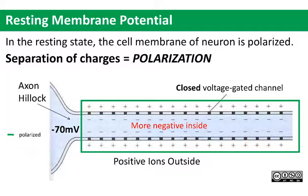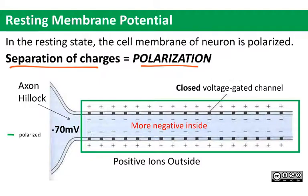What that means is that there is a separation of charges across the plasma membrane — that's what polarization means. So the neuron is polarized, and opposite charges attract one another. You end up with a situation where you have negative charges close to the surface of the axon as well as the rest of the plasma membrane, and positive charges just on the other side of the membrane attracted there by the negative charge. It's almost like a battery.